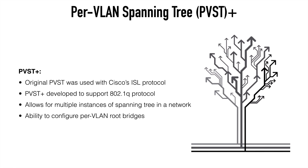What PVST+ allows us to do is create multiple instances of Spanning Tree in our network — in fact, one Spanning Tree instance for every single VLAN. This means we have the possibility of creating a different root bridge for every VLAN rather than having a single root bridge, and each root bridge handles all the Spanning Tree path calculations for its dedicated VLAN. We can also create secondary root bridges for VLANs to build redundancy into our network.